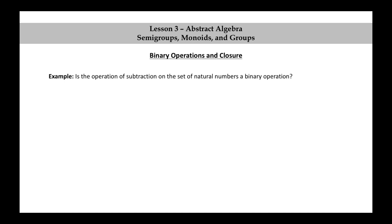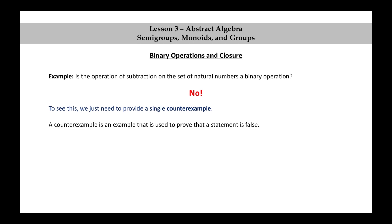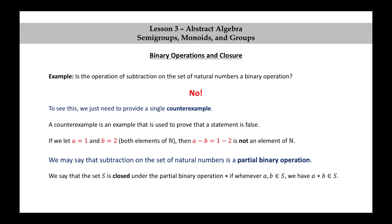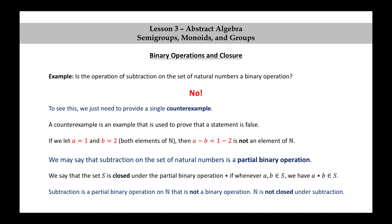Another example. Is the operation of subtraction on the set of natural numbers a binary operation? This time, the answer is no. To see this, we just need to provide a single counterexample. A counterexample is an example used to prove that a statement is false. If we let a equal 1 and b equal 2, both elements of N, then a minus b equals 1 minus 2, and this is not an element of N. We may say that subtraction on the set of natural numbers is a partial binary operation. We say the set S is closed under a partial binary operation star if whenever a and b are in S, we have a star b in S. So subtraction is a partial binary operation on N that is not a binary operation — in other words, N is not closed under subtraction.